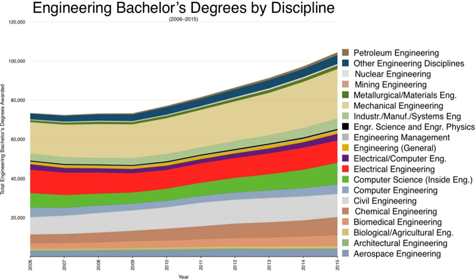In Portugal, there are two paths to study engineering: the polytechnic path, which is more practical oriented, and the university path, which is more research oriented. The polytechnic institutes award a licenciatura in engineering after three years of study, complemented by a mestrado in engineering after two-plus years. Universities offer both engineering programs similar to those of the polytechnics, as well as mestrado integrado programs in engineering that take five years, awarding a licenciatura after the first three years and a mestrado after the whole five years. Universities also offer doutoramento programs in engineering.